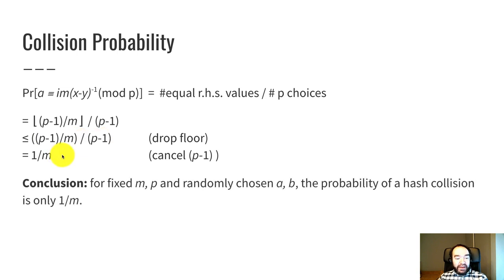So what that says is that for a fixed M and P and randomly chosen A and B, the probability of a hash collision is only one over M.